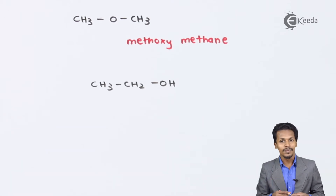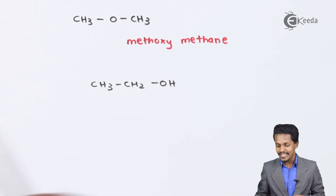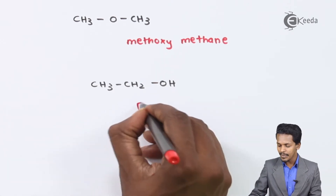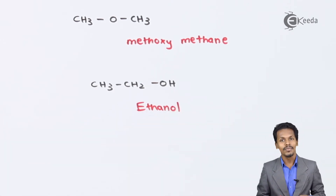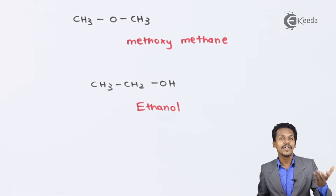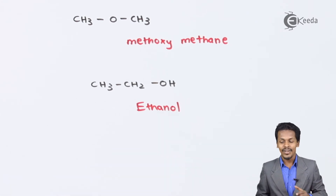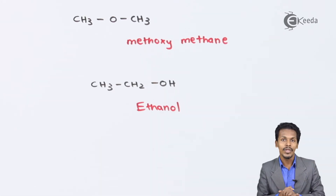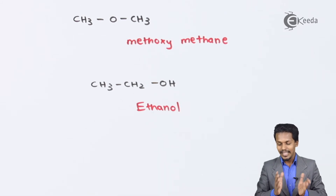The difference is in the functional group — this is an ether while the other is an alcohol, ethanol. So these two are functional isomers of each other. This is how ethers can also be related to alcohols through isomerism.